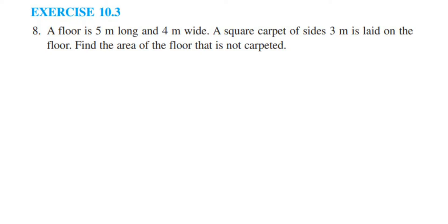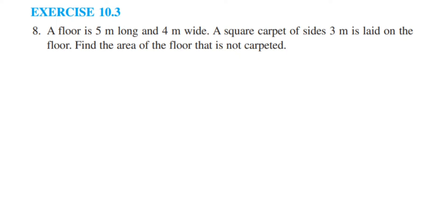Here is a question from Excel 10.3, 8th question. The chapter is mensuration of class X. The question is: a floor is 5 meters long and 4 meters wide. A square carpet of side 3 meters is laid on the floor. Find the area of the floor that is not carpeted. What is given: the floor has length 5 meters, breadth 4 meters, and the carpet has side 3 meters laid on the floor.